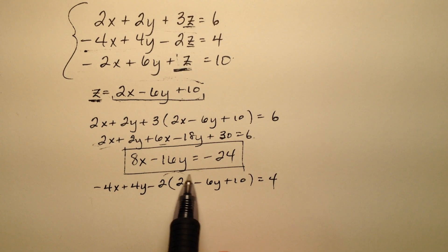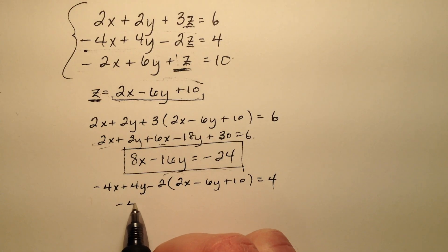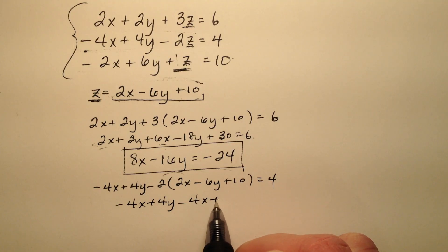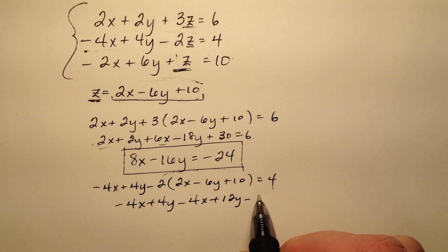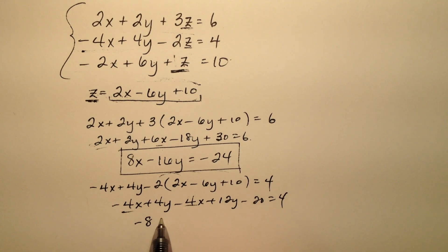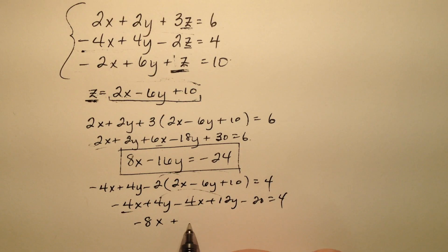So let's distribute and simplify a bit. Negative 4x plus 4y minus 4x plus 12y minus 20 equals 4. So again, negative 8x, and I have a plus 16y, and that equals a positive 24.